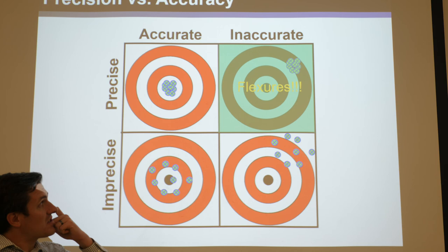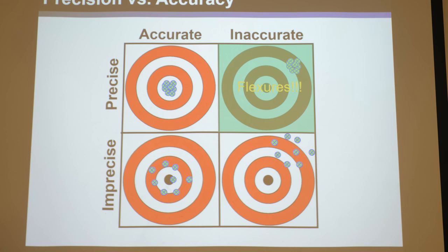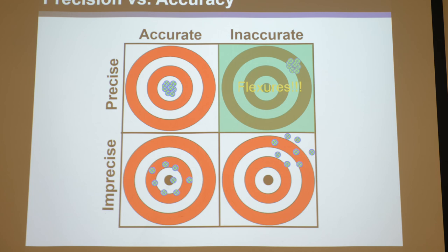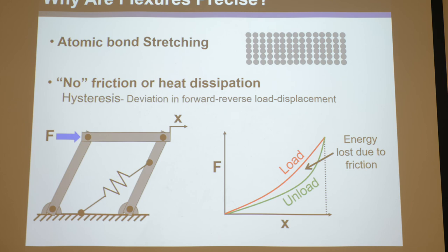Flexures are like the precise-but-inaccurate archer: very repeatable with a tight spread, but almost impossible to get them to be exactly on target as intended once manufactured. But that's no problem - just like telling an archer to aim somewhere different because they're consistently off in one direction, you can calibrate the flexure. As long as it's really precise and repeatable every time, you can just tell it to aim in a different place and it'll work. You build it, it's never the accuracy you want, but then you calibrate it and can achieve both accuracy and precision.